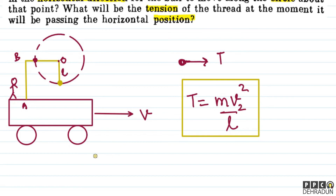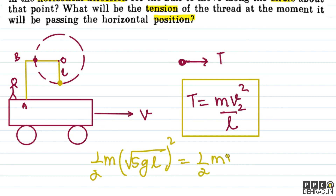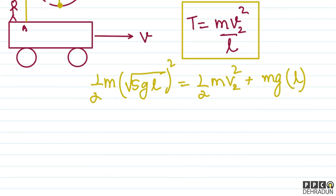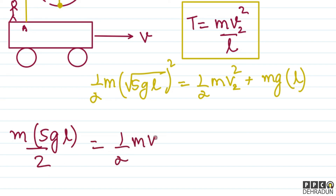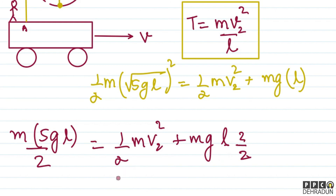Using energy conservation: initially the energy is ½m(√5gL)² = 5mgL/2. At the horizontal position: ½mv₂² plus the height gained of L gives mgL. So 5mgL/2 = ½mv₂² + mgL. Rearranging: ½mv₂² = 5mgL/2 − 2mgL/2 = 3mgL/2.